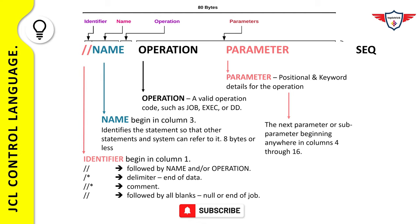The parameters defined depend on the operation: if it's a JOB operation, parameters are related to a job card; if it's an EXEC statement, parameters relate to the execute statement; and if it's a DD statement, parameters are associated with DD statements. The last field is the sequence number, which is optional and no longer used — it was used in the 1960s for punch cards.